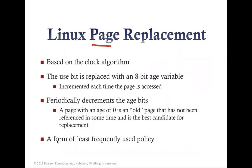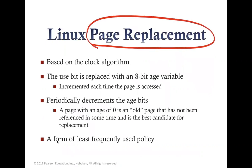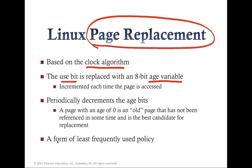In Linux, a virtual address consists of four fields: an index to the page directory, an index to the page middle directory, an index to the page table, and an offset within the page. This three-level structure was designed to accommodate the 64-bit Alpha processor. For 32-bit x86 architecture with two-level hardware paging, Linux accommodates the two-level scheme by defining the page middle directory size as one, with extra indirection optimized away at compile time, so there is no performance overhead.